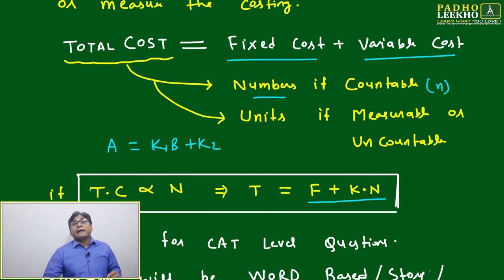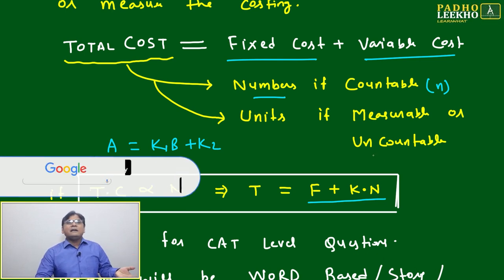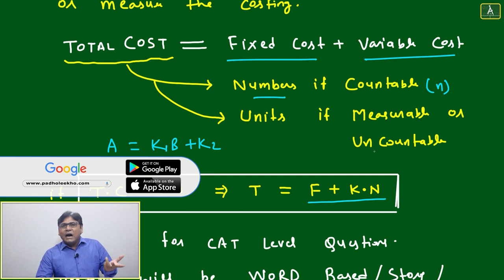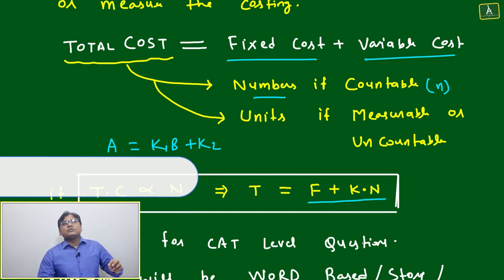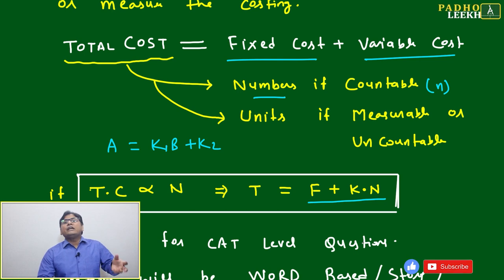If it is not a countable noun, meaning you can't count it—like if you are producing sugar, any raw material, or liquid—then you can't count that. It's an uncountable noun. Then we have to measure. Two activities we are doing: either we can count or we can measure.